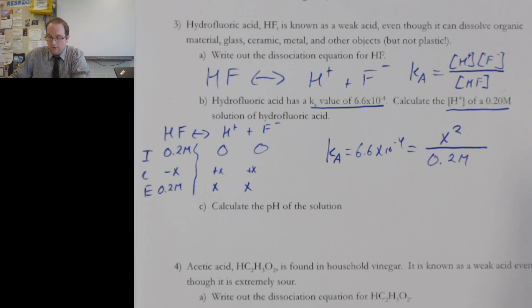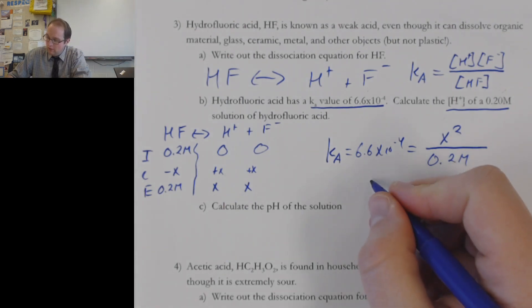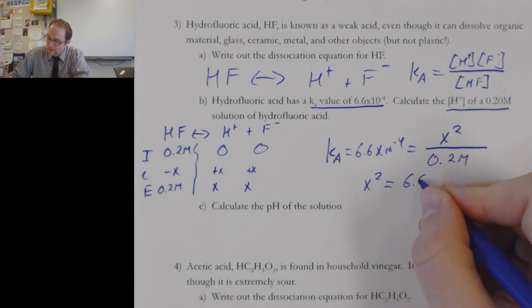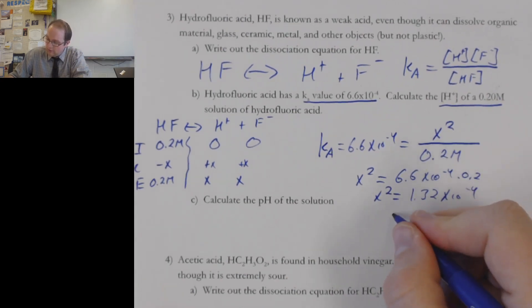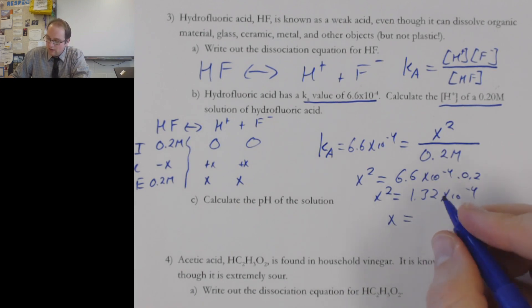Now I just need to solve for my X values. You should be able to end up and multiply both sides and get X squared to be equal to 6.6 times 10 to the negative fourth, times the 0.2, which gives you, this should be 1.32 times 10 to the negative fourth. And then of course square rooting, and I'm going to get X equal to 0.0115 molar.